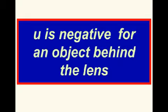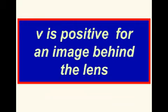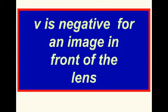On the other hand, v is positive for an image behind the lens. v is negative for an image in front of the lens.